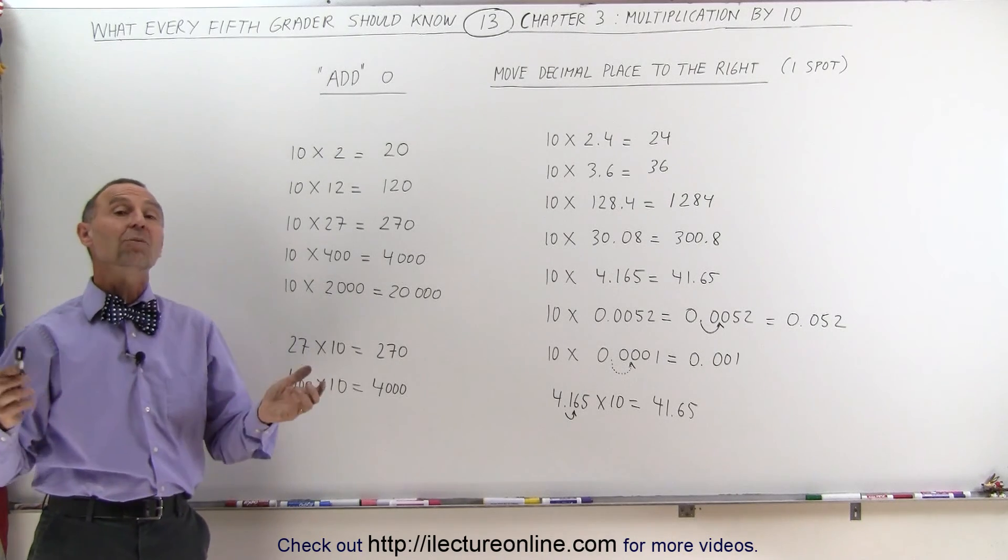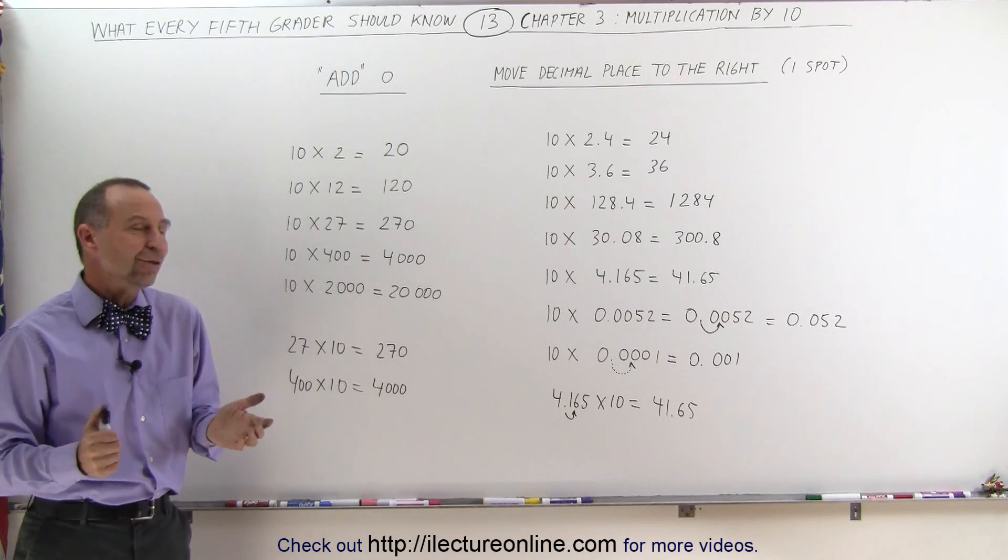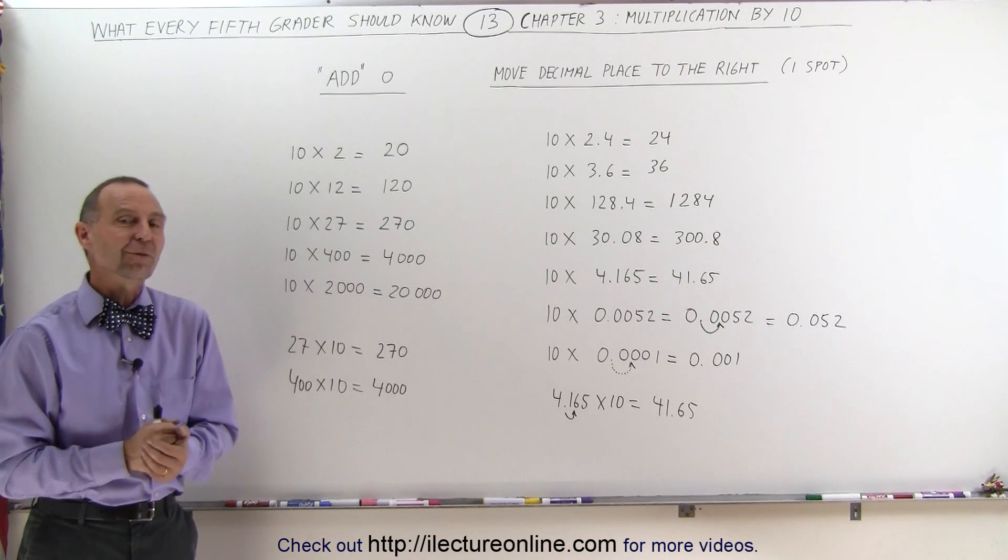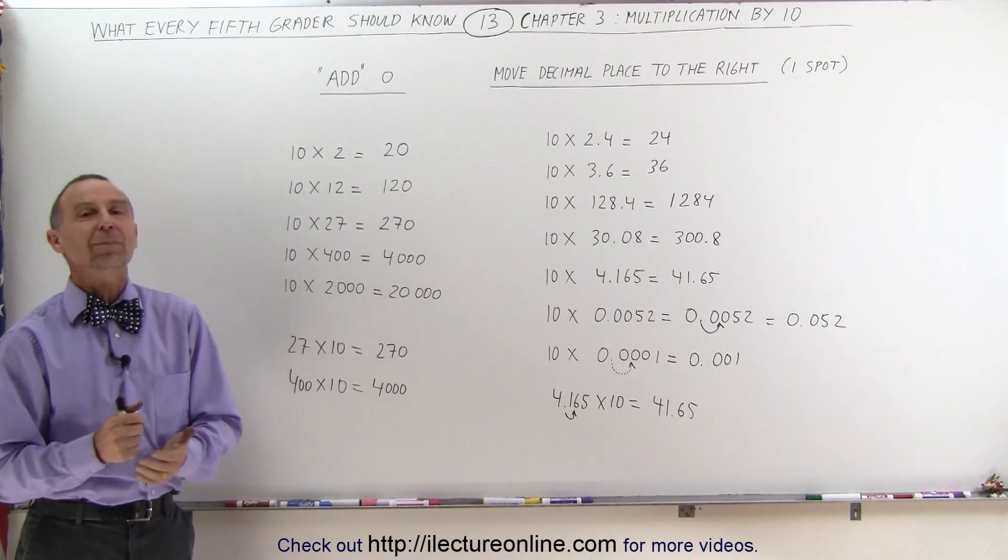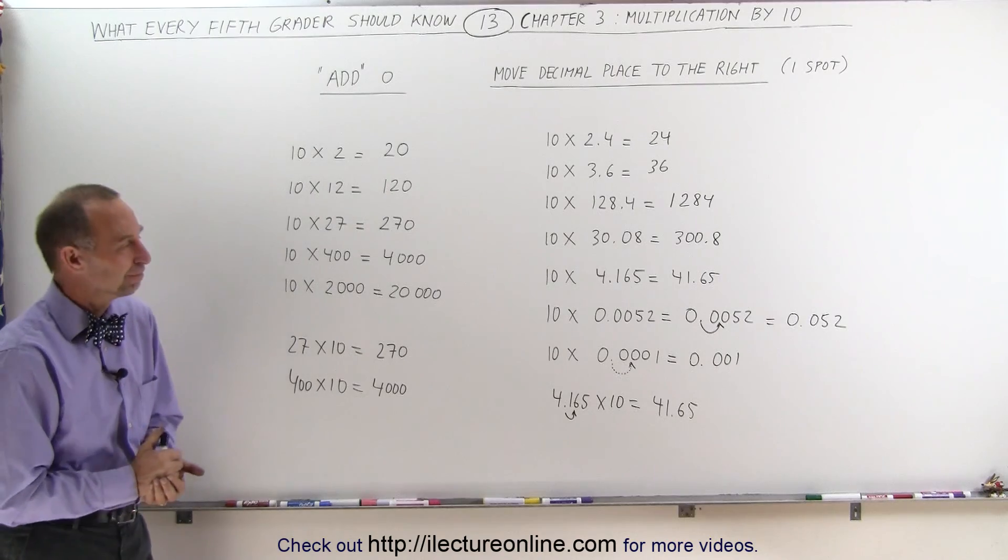That's how we deal with multiplication with 10. It's one of the easiest things to do: either add a 0 or move the decimal place over one spot, and that's how we multiply times 10.